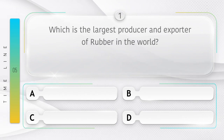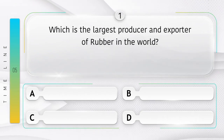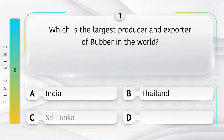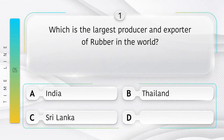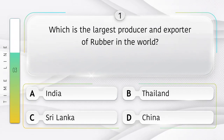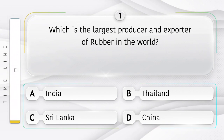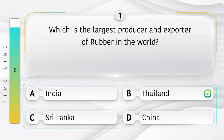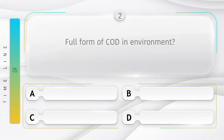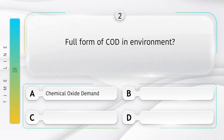Which is the largest producer and exporter of rubber in the world? Option A: India, B: Thailand, C: Sri Lanka, D: China. Answer is option B, Thailand.